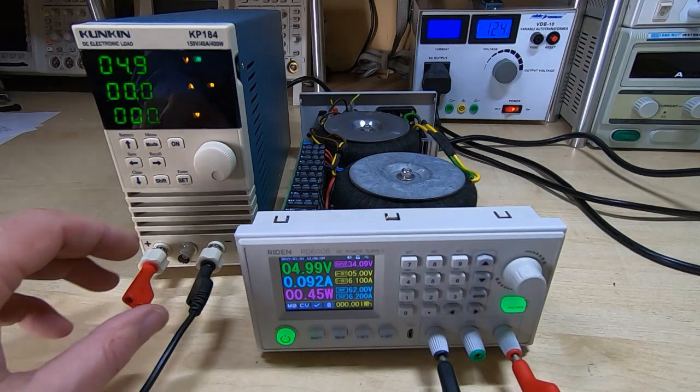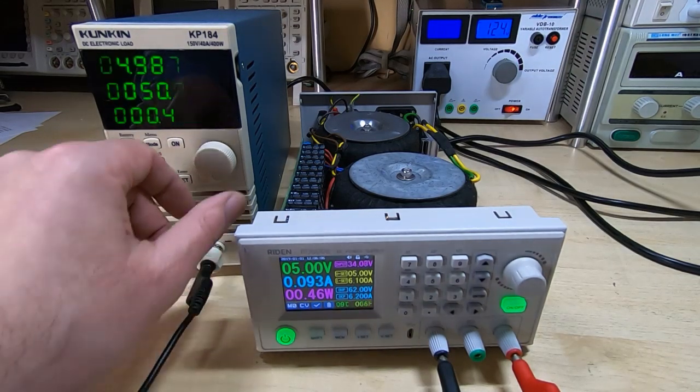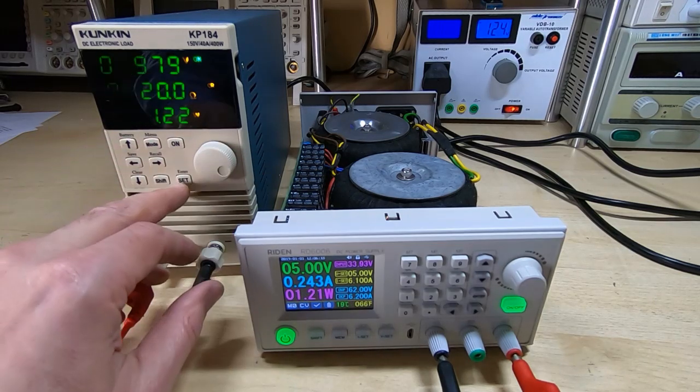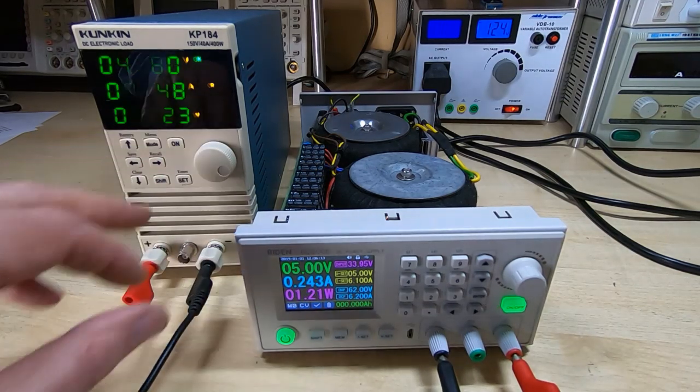I'll try reducing the constant resistance value. I'll go down to 20 ohms and we're now seeing 1.2 watts.